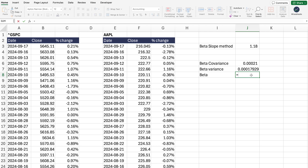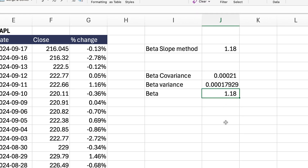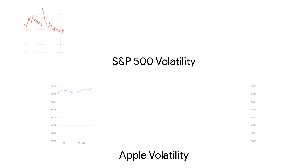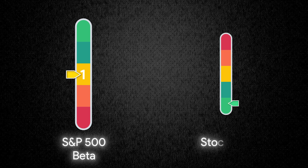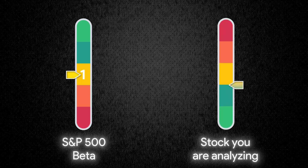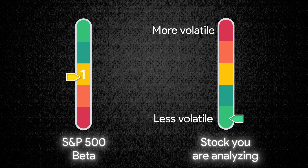Now in order to calculate the beta, all we need to do is take the covariance and divide it by the variance. As you can see, in both cases the beta is absolutely the same. In simple terms, beta is a measure of the volatility of a particular stock price relative to an index like the S&P 500. If the S&P 500 has a beta of 1 and the stock you're analyzing has a beta higher than 1, this means that the company's stock price is more volatile than the S&P 500. On the other hand, if the company has a beta lower than 1, it means that the stock price is less volatile than the S&P 500.